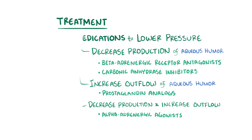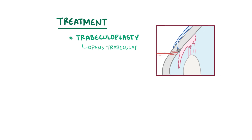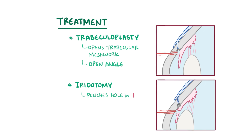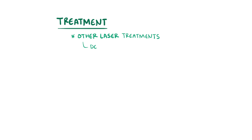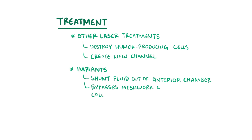In addition to medications, there are also laser treatments available. For example, trabeculoplasty is a treatment where a laser is used to open the trabecular meshwork, and this helps treat open-angle glaucoma. There's also iridotomy, which uses a laser to punch a tiny hole in the iris, which helps to treat closed-angle glaucoma. Other laser treatments include ones that destroy the humor-producing cells, which reduces production of the fluid, and in serious cases, can be used to create a new channel through which the aqueous humor can be drained out. Finally, there are implants that shunt fluid out of the anterior chamber by bypassing the trabecular meshwork and collecting system.